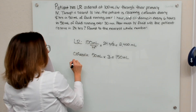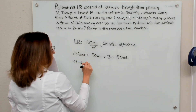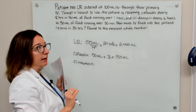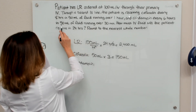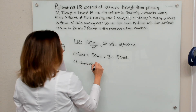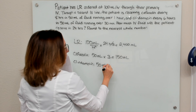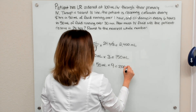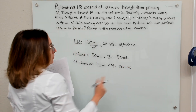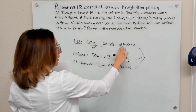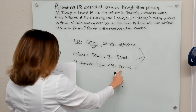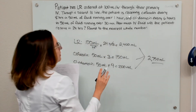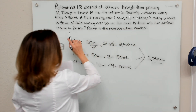With the clindamycin, it's being administered every six hours — that is four times a day — and every time it's given, the patient also receives 50 mLs of fluid. So 50 mLs times four gives 200 mLs. Then all we need to do is add up these volumes: 2,400 plus 150 plus 200 equals 2,750 mLs. That is the total amount of IV fluids the patient will receive in 24 hours.